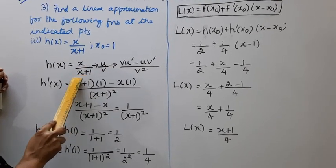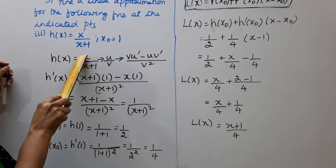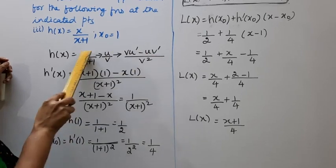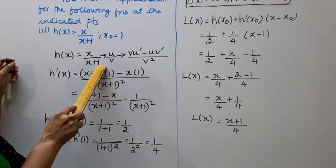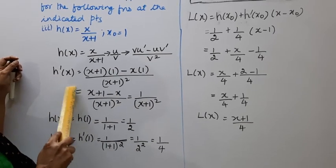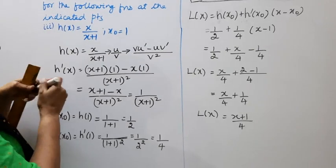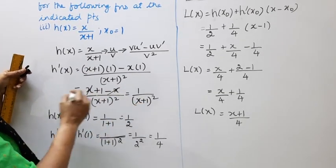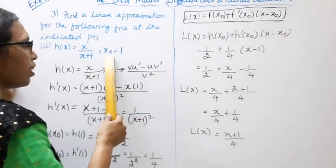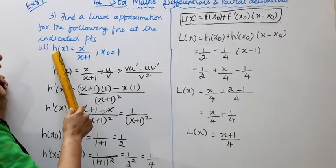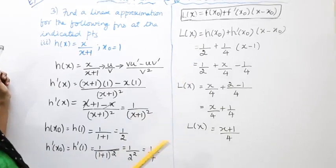Here u is x and v is x plus 1. The denominator becomes (x+1) whole squared. v is x+1; u' — differentiating x gives 1. Minus u, which is x; v' — differentiating x+1: differentiating x gives 1 and differentiating 1 gives 0, so v' = 1. So h'(x) = (x+1)·1 minus x·1, divided by (x+1)². The x terms cancel, giving h'(x) = 1/(x+1)².